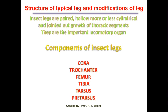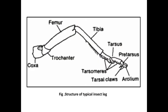If you see the structure of insect legs, the insect leg consists of the following components: coxa, trochanter, femur, tibia, tarsus, and pretarsus — these are the different parts of the insect legs. This is the typical structure of the insect leg.